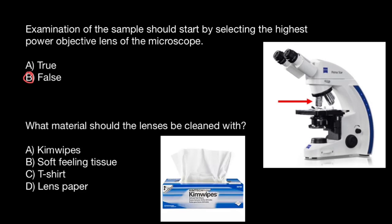So as you can see, variant A can be a good choice, but you have to check the labels on the box. But if you have lens paper, of course that means we have to choose that variant, because we can use it without hesitation. This paper is specially developed to clean lenses.